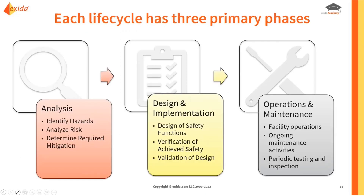Each of the different lifecycles we'll look at has three main phases. The first is the analysis phase: how do we identify hazards, analyze the risk, understand how bad it would be, and decide what risk mitigation is required. Then we go to design and implementation — actually designing our safety functions, making sure they achieve the necessary safety whether based on a SIL level or a PL, and then validating that the design as implemented fully meets requirements, including software requirements and that correct components and versions were used on site.